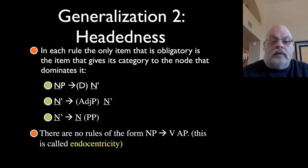This is important because there are no rules in our system of the form noun phrase consists of verb plus adjective phrase. There's no rule in which there is not a noun inside the noun phrase. Now, you'll recall from before that we talked about how there's certain functional categories like complementizer phrases and tense phrases where it appears as if there is no head. We're going to have to come back to those, and we'll do those in Unit 7.